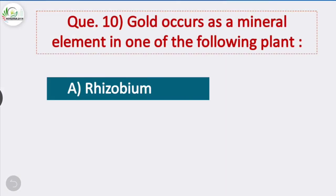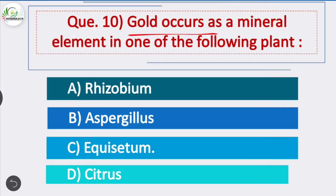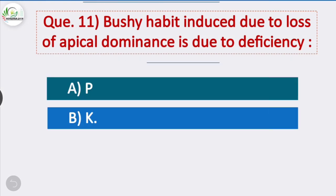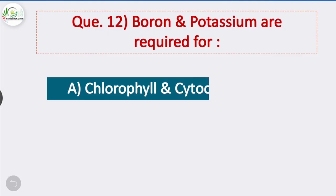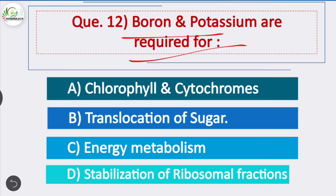Question 10: Gold occurs as a mineral element in which plant? Option C is correct — Equisetum is a plant in which gold occurs as a mineral element. Question 11: Bushy habit induced due to loss of apical dominance is due to deficiency of — when apical dominance is lost, the bushy habit of the plant is seen. Question 12: Boron and potassium are required for — option B is correct — boron and potassium are required for translocation of sugar in plants.